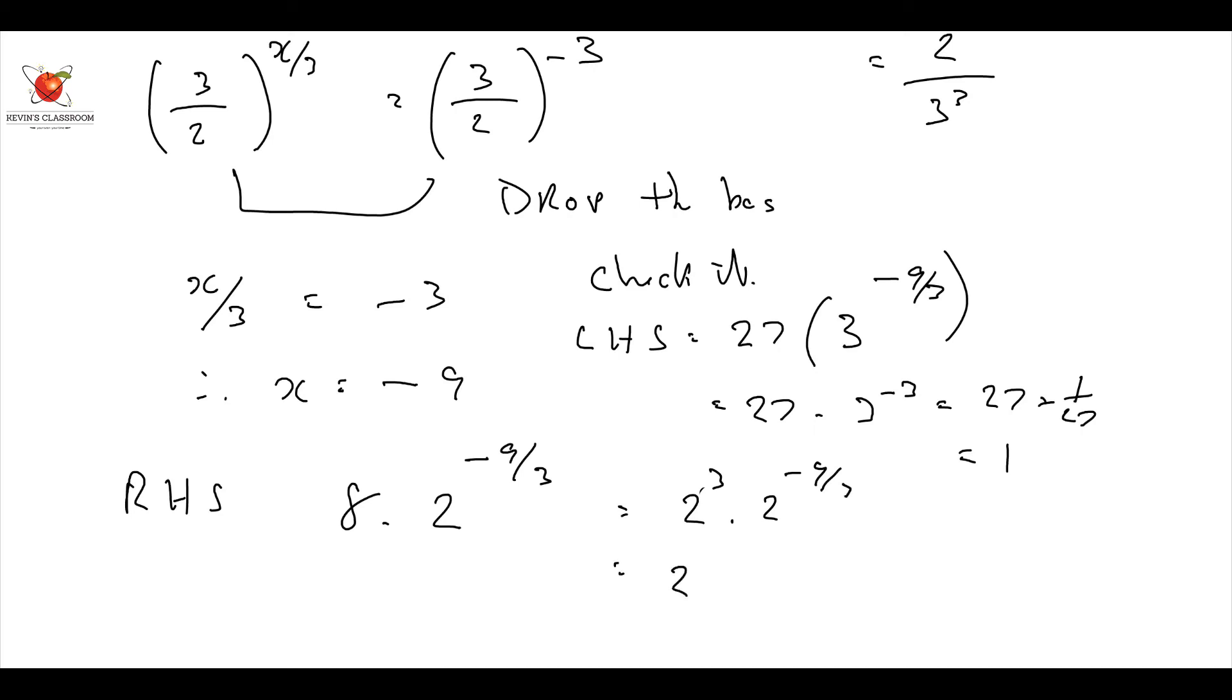Well, that is going to be 2 to the power of 3 multiplied by 2 to the minus 3 which is equal to 2 to the power of 0 which is equal to 1. Therefore left hand side equals right hand side.